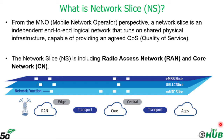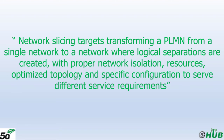In addition, multiple network slices of different types can be seen as a single product targeting many business customers with multiple bundles and different requirements. For example, a vehicle may simultaneously need a slice with high bandwidth for information and another slice with ultra-reliable features for assisted driving. In brief, network slicing is transforming public land mobile networks from a single network to one where logical separations are created within the same infrastructure, with proper network isolation, resources, and specific configuration to serve different service requirements with different quality of service.